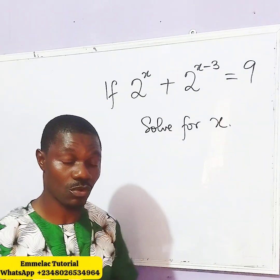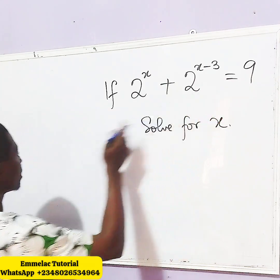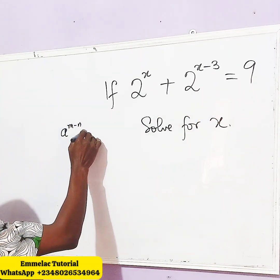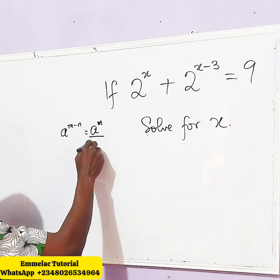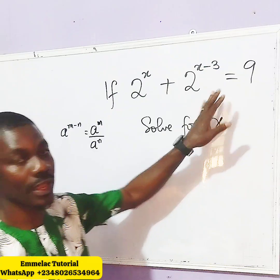So, all we need to do is to recall the laws of indices and one of them is this: if you have a raised to m minus n, this is simply saying a raised to m all over a raised to n. I'm going to apply this law here.